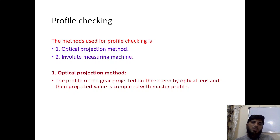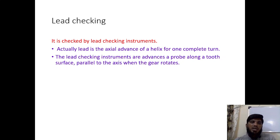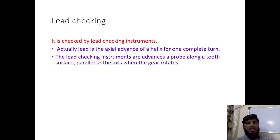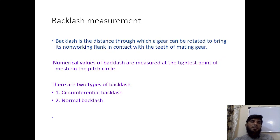For profile checking, the methods used are the optical projection method and the involute measuring method. In the optical projection method, optical lenses project the profile and the value is measured using a master profile for comparison. Lead checking uses instruments that advance a probe along the tooth surface parallel to the axis; the lead is the actual advance of the helix for one complete turn of the helical gear.